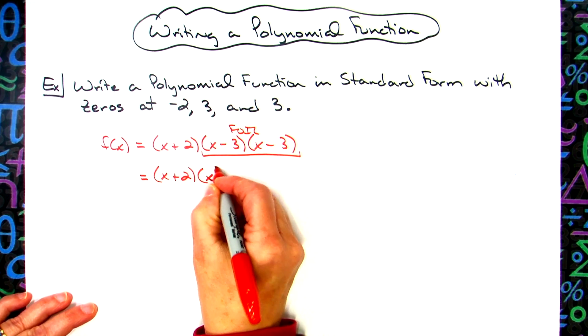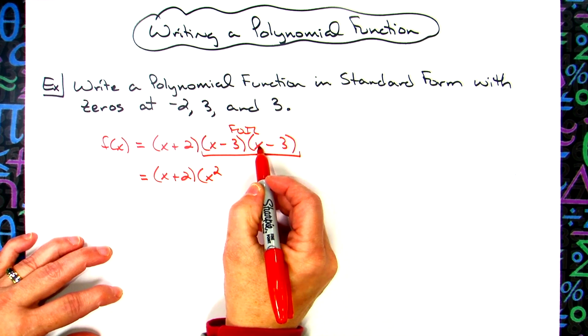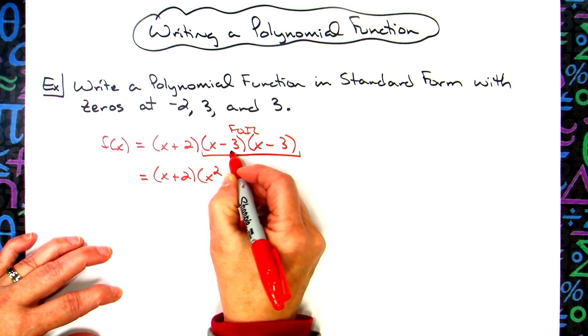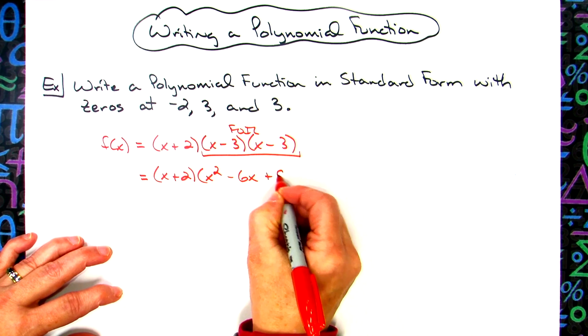Foiling here, I'm going to have an x squared. Then we'll have a minus three x and a minus three x, which will give us a minus six x. A negative three times a negative three is going to give us a positive nine.